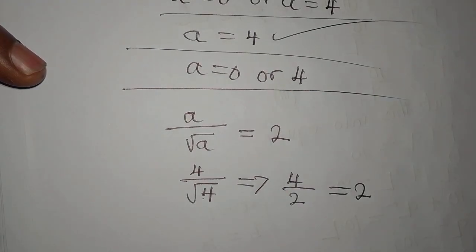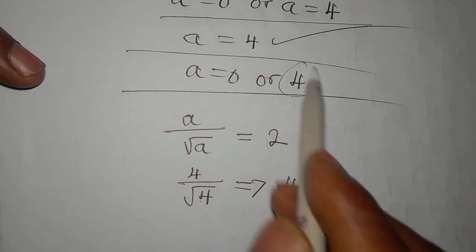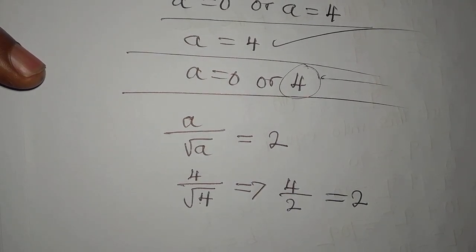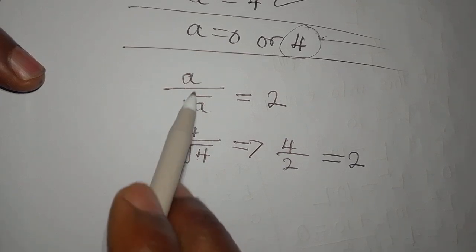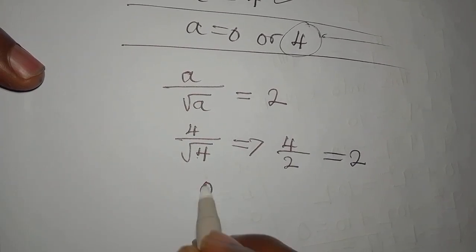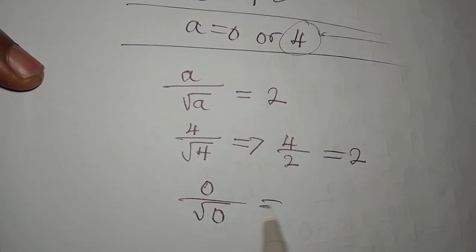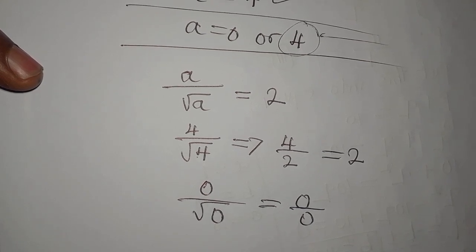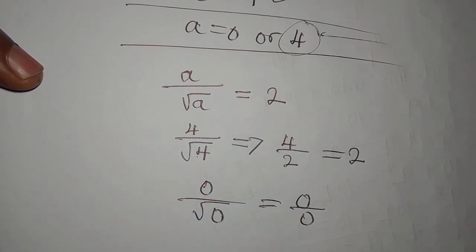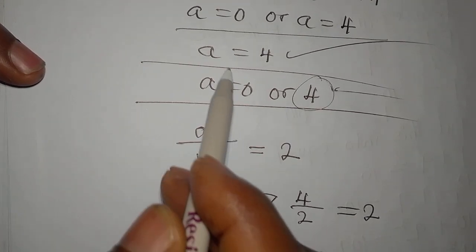But then if we put a to be zero, you're going to have 0 over square root of 0, which is 0 over 0, and this does not make sense or it will not give us 2. So this means that a to be equal to 0 has to be rejected.